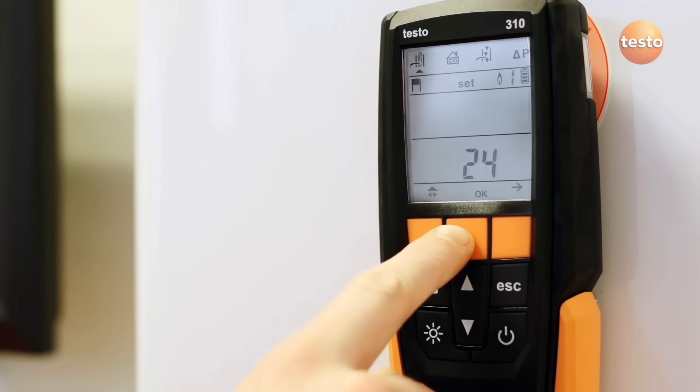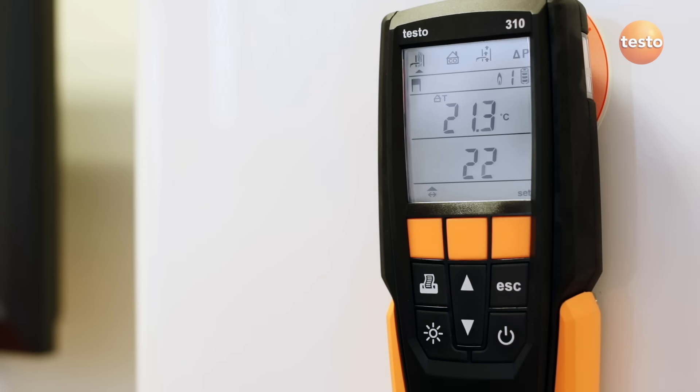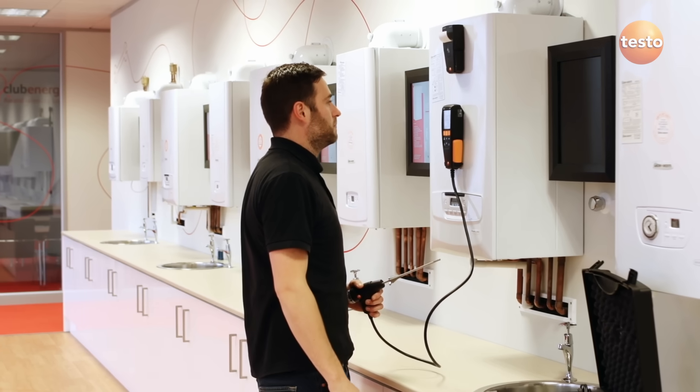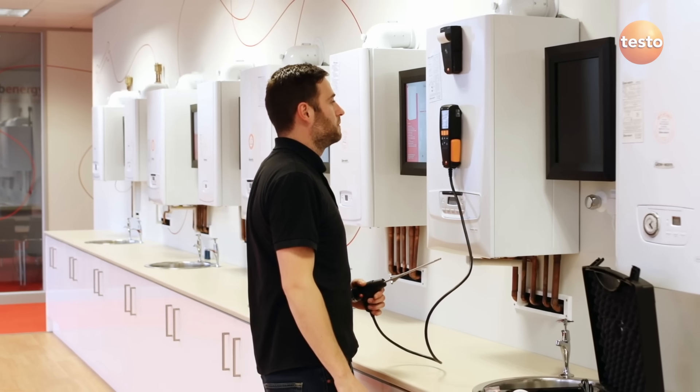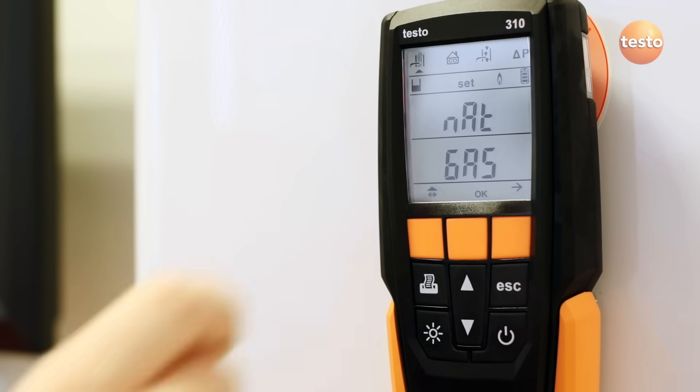Then let the 310 zero the gas sensors with the probe in fresh air. While the sensors are zeroing, which takes 30 seconds, you can choose the fuel type.